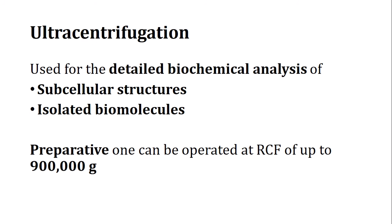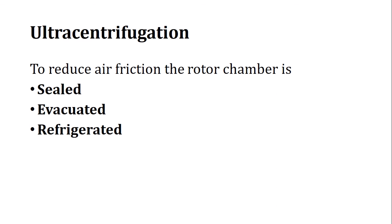The final type is the ultracentrifuge, used for detailed biochemical analysis of subcellular structures and isolated biomolecules. The preparative ultracentrifuge can be operated up to 900,000 RCF (nine lakh g). To reduce air friction, the rotor chamber is sealed, evacuated, and refrigerated. Sealing is required for proper evacuation and also aids in refrigeration.